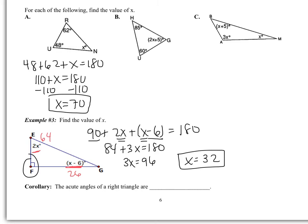This leads us to a corollary: the acute angles of a right triangle are complementary. If three angles sum to 180 and one of them is 90, the other two must sum to 90.